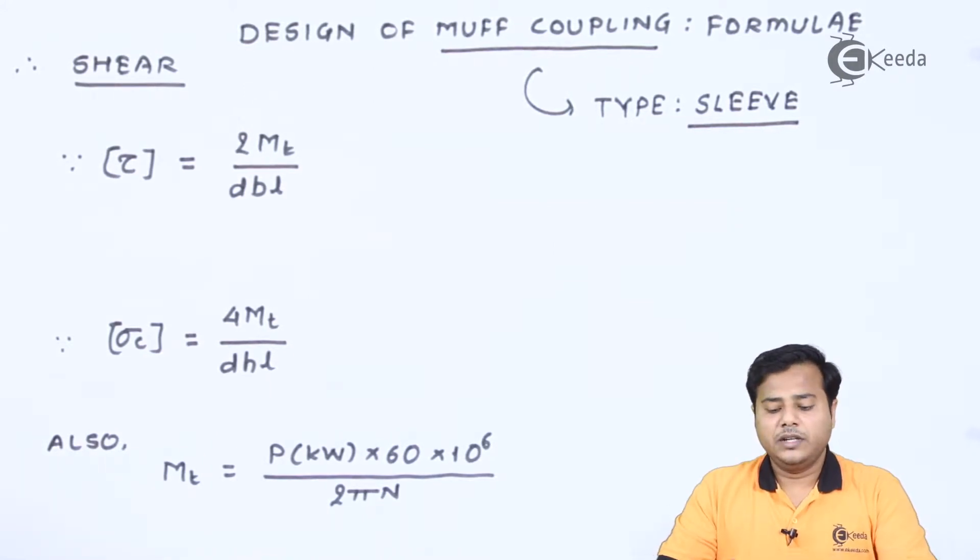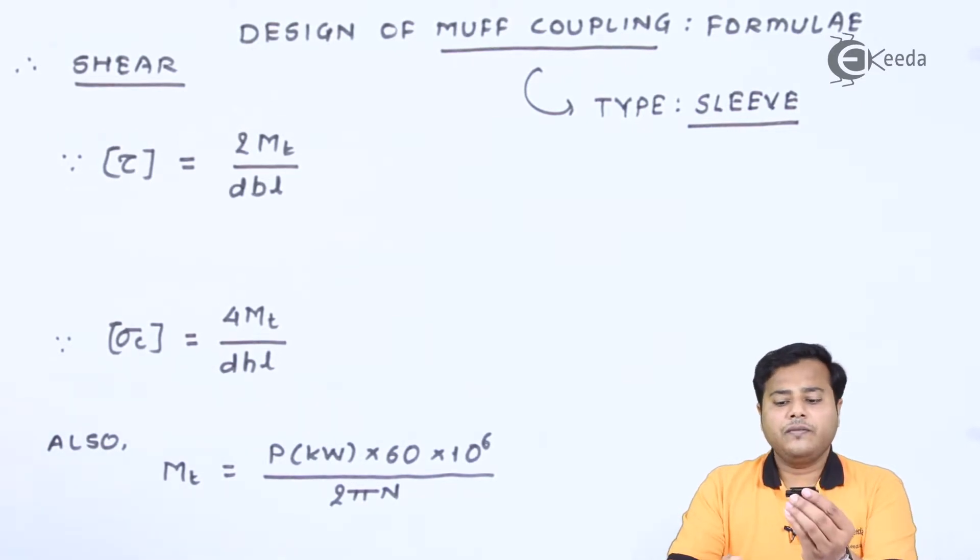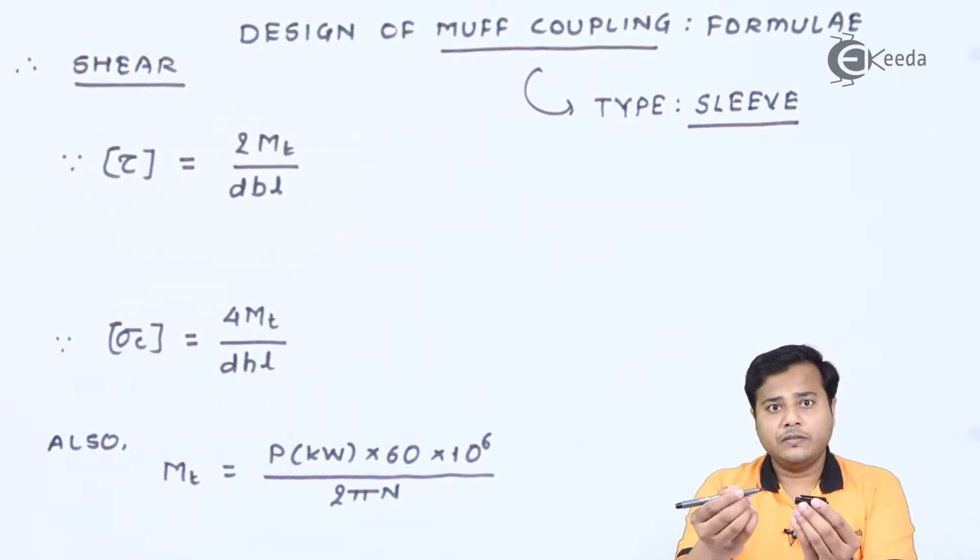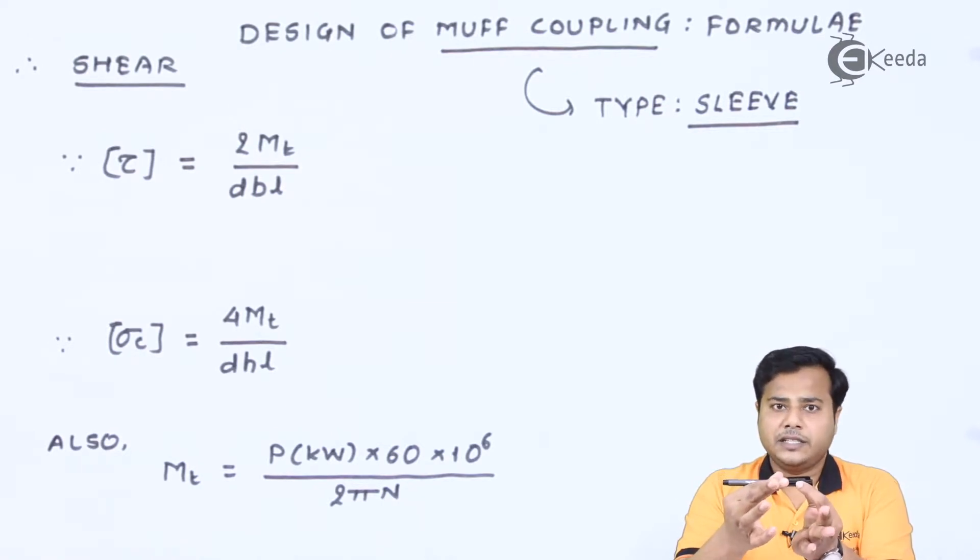For example, let us take the example of this particular pen. If this is the pen which is going to be a shaft, this particular cap is going to be the MUF coupling so that the shaft can be inserted inside it. So that is what the differentiation is.